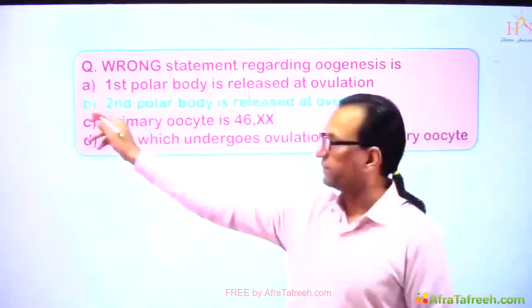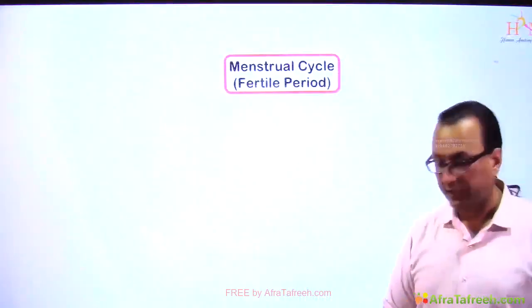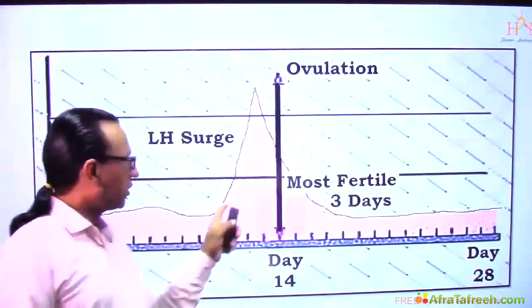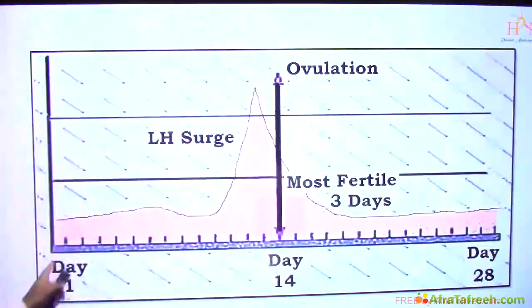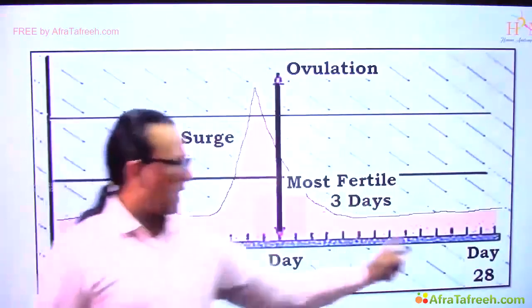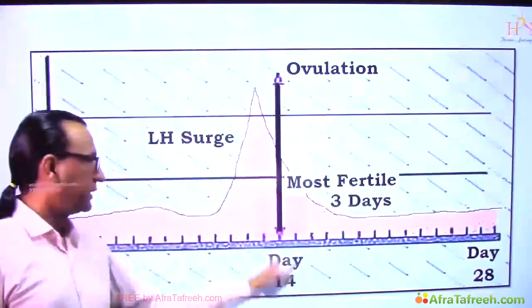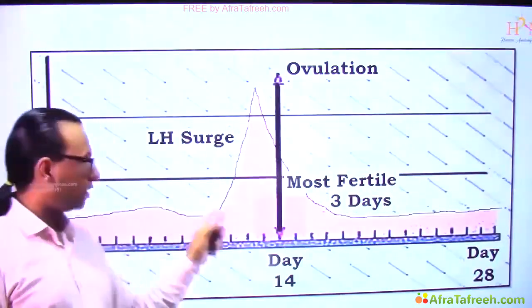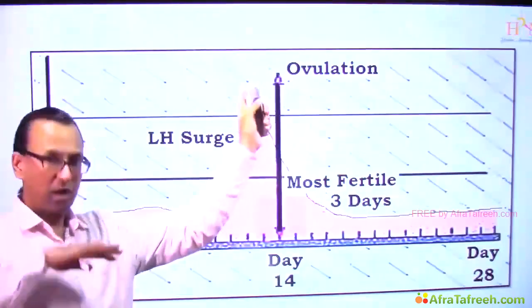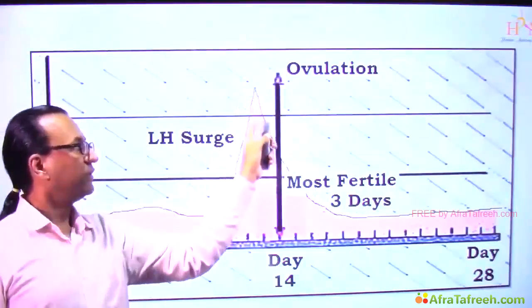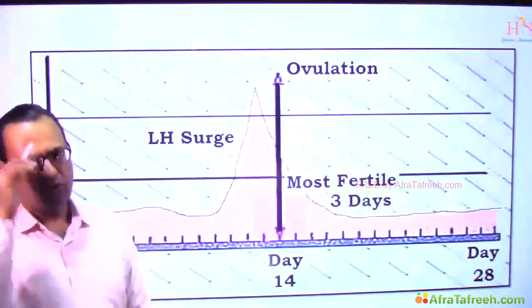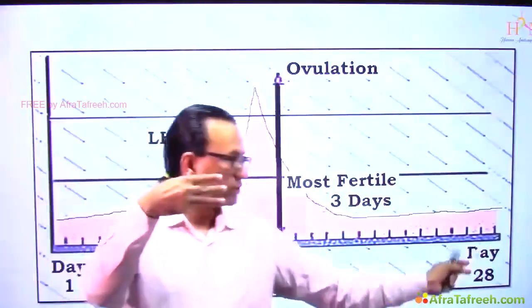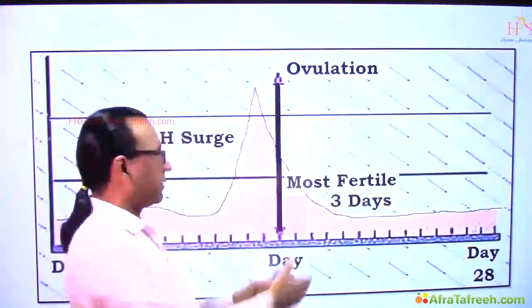Now we will talk about the menstrual cycle in more detail because there are questions on that. Notice there is a plotting of LH hormone concentration. The menstrual cycle begins on day number one of the last menstrual period and ends on day number 28. Mid-cycle, day number 14 is the day of ovulation. Just before ovulation there will be a sudden increase in LH hormone concentration — the LH surge — followed by the LH peak, and then the level descends. There is also a fertile period of three days total.